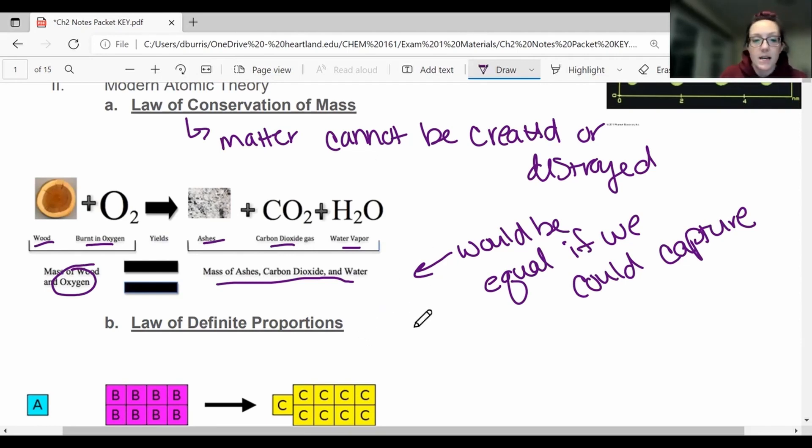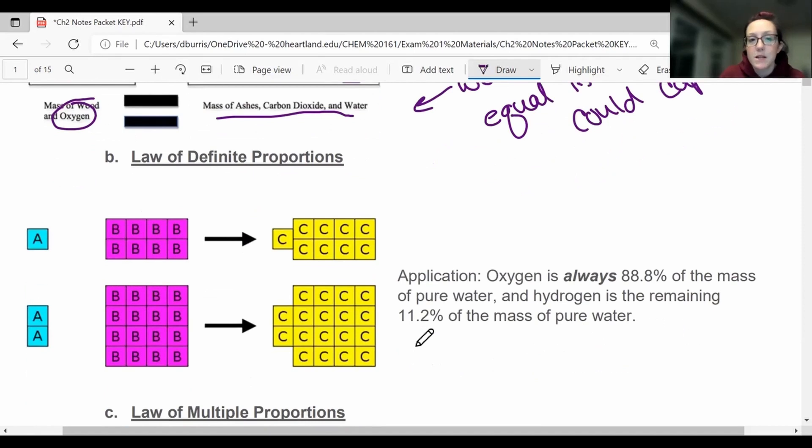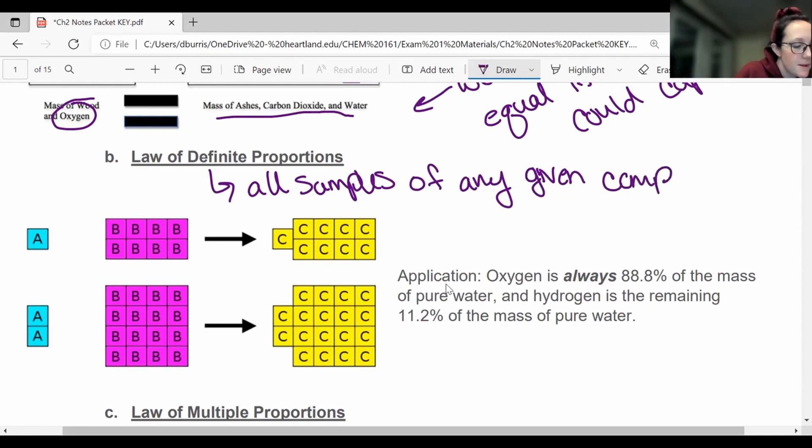Here's a couple other laws that govern exactly what we see in chemistry. The first being the law of definite proportions, which has to do with what it sounds like. The law of definite proportions has to do with proportions or ratios. And essentially it says that any given compound, so all samples of any given compound will have the same proportion or ratio, will have the same proportion of elements.